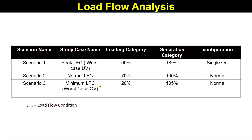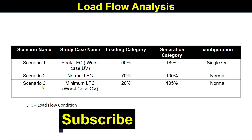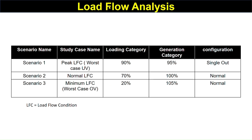In scenario second, we consider Normal LFC load flow case study, where the loading is normal, the generation category is also normal, and the configuration is also normal. In scenario third, we consider Minimum LFC, where the loading category is 20%, the generation category is 105% — that is peak generation — and the configuration is normal.